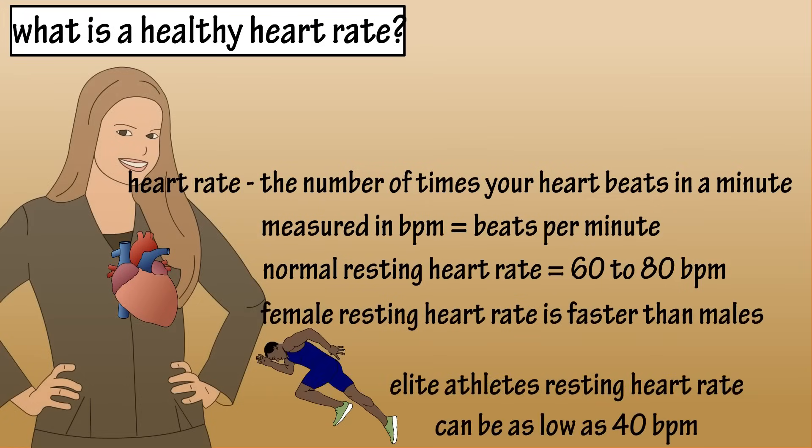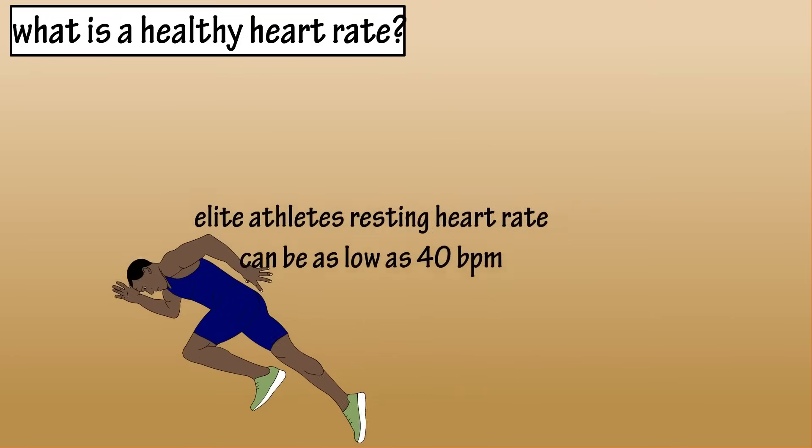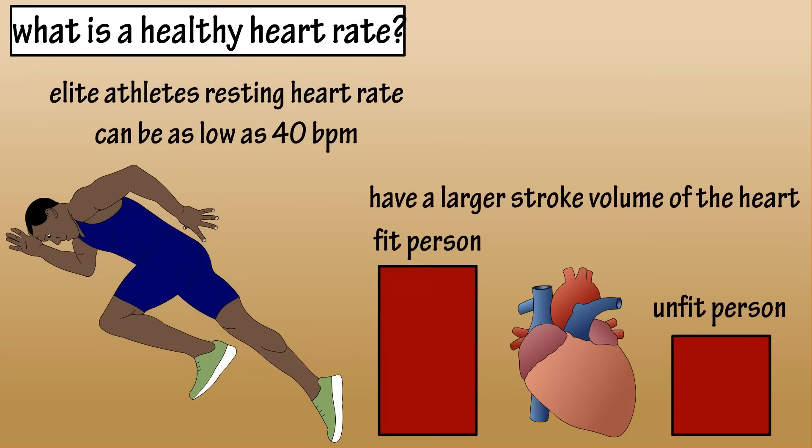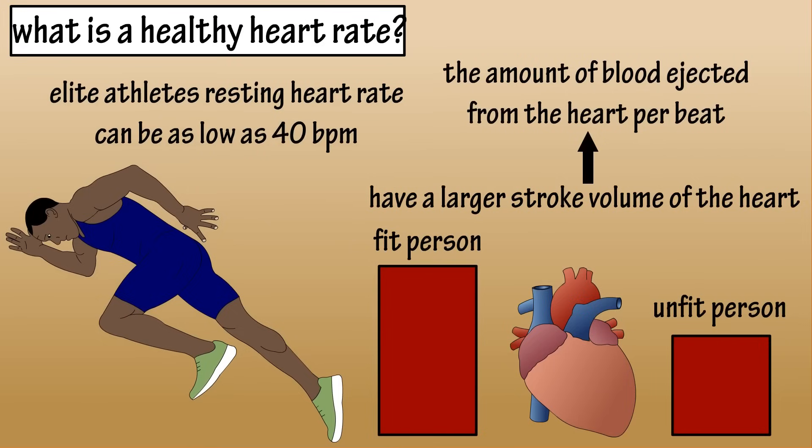Elite athletes can have a resting heart rate as low as 40 beats per minute. This is because individuals that are fit have a larger stroke volume of the heart. Stroke volume is the amount of blood ejected from the heart per beat. So the heart of someone who is really fit does not need to beat as many times to have the same output of blood as an unfit person.